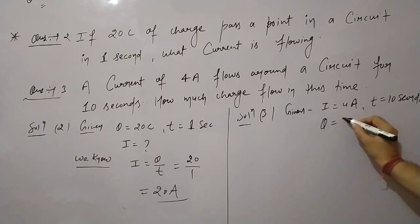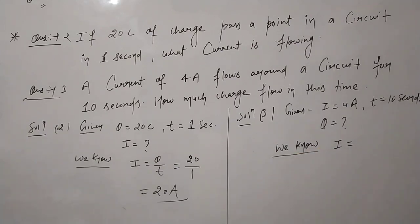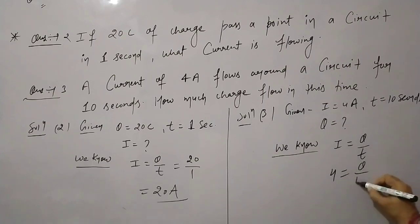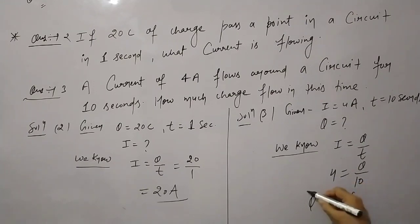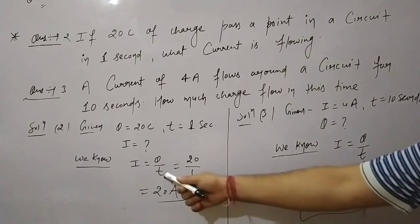An Ammeter is a device which tells you about current — how much current is flowing in a particular conductor or device. If you connect a conductor with an Ammeter, it will tell you the current value. The unit of electric current is the Ampere — this is an important exam point.